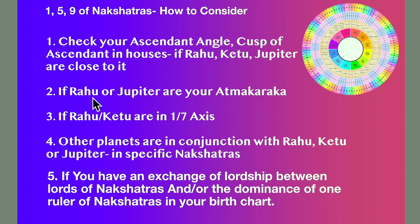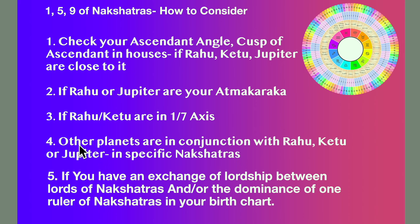Rule Number 2: if Rahu or Jupiter are your Atma Karaka, which we'll speak about much later on. Rule Number 3: if Rahu and Ketu are in the 1st and 7th axis. Rule Number 4: if other planets are in conjunction with Rahu, Ketu or Jupiter in specific nakshatras — the focus being on specific nakshatras.